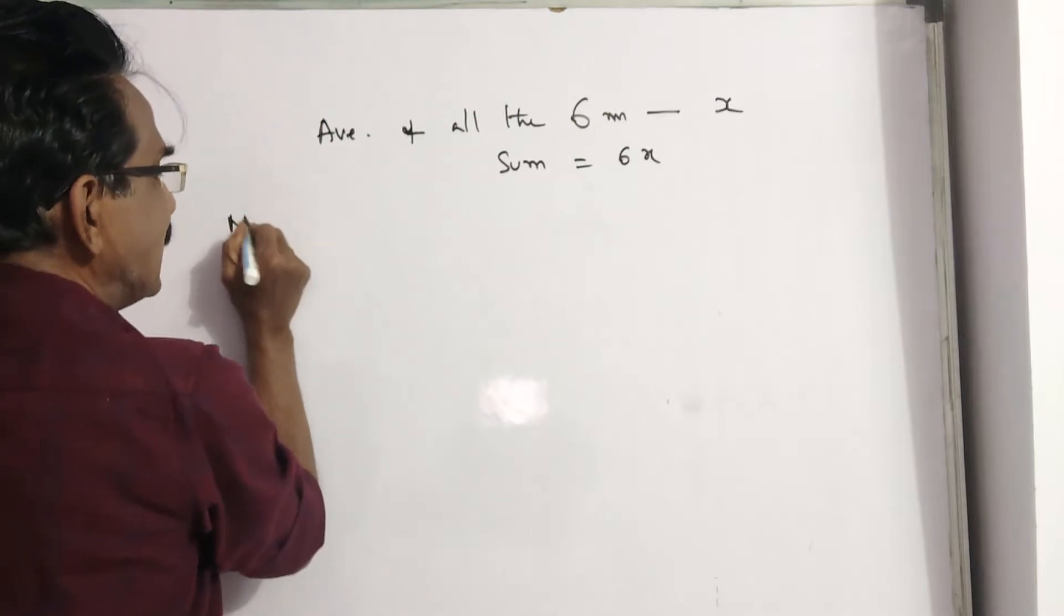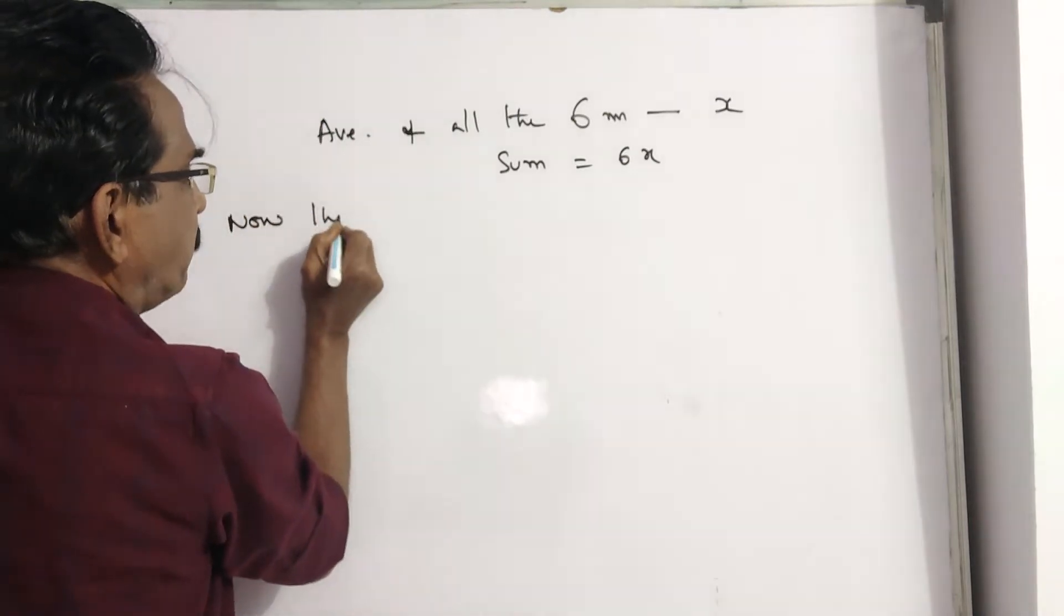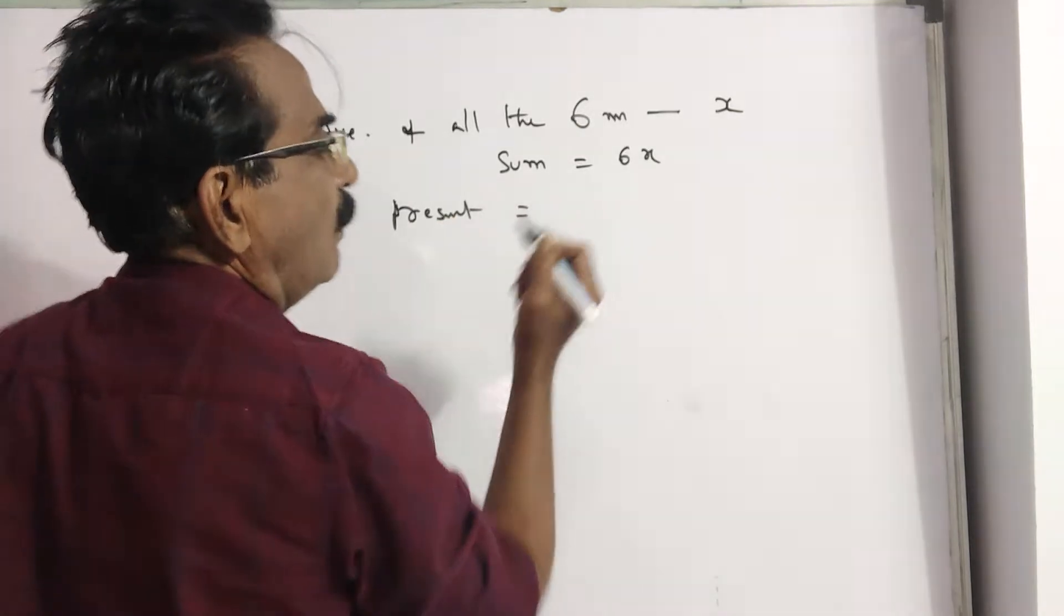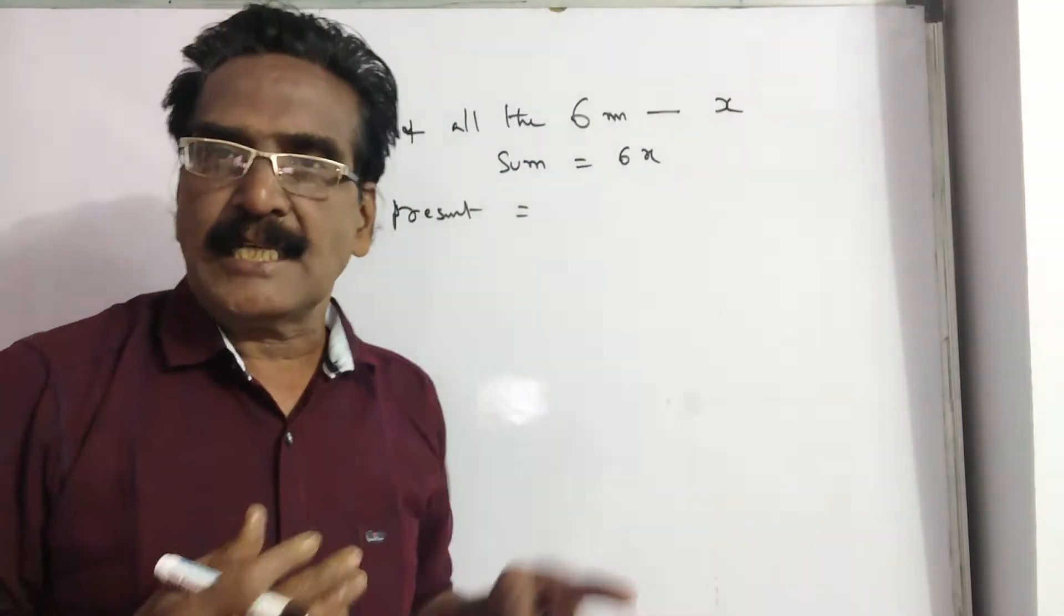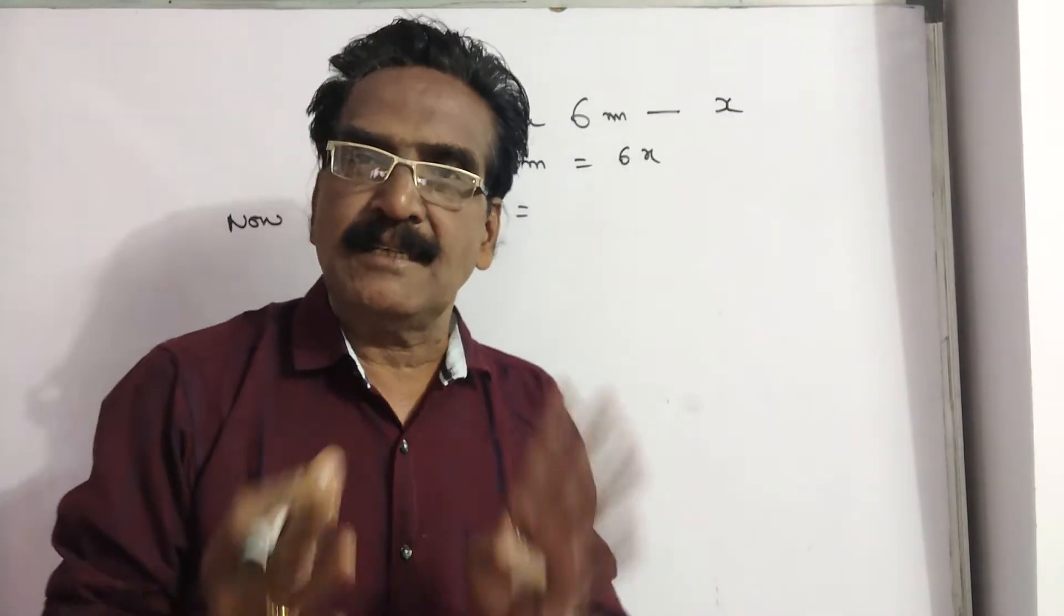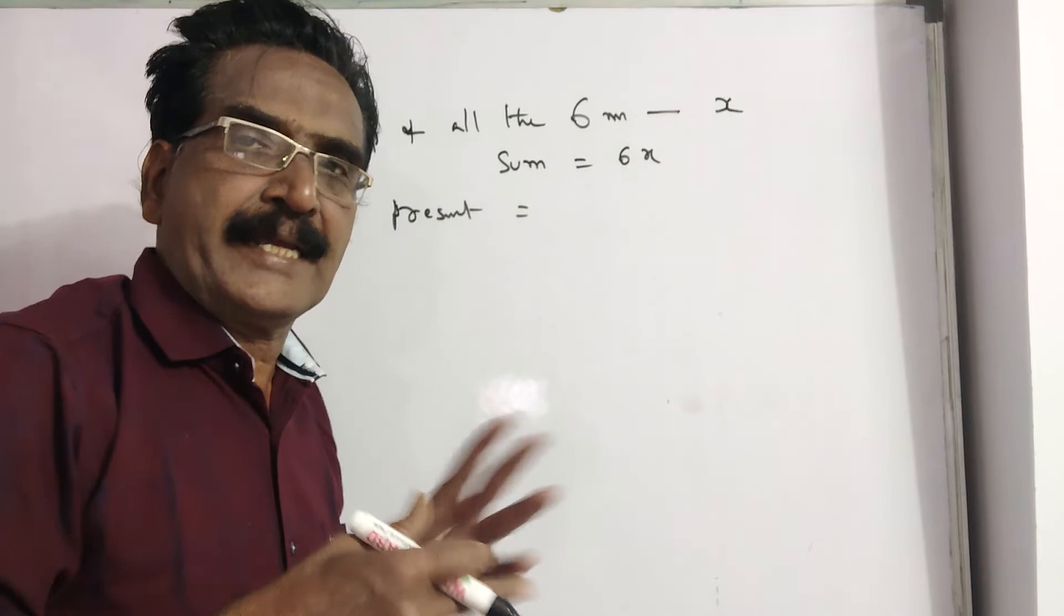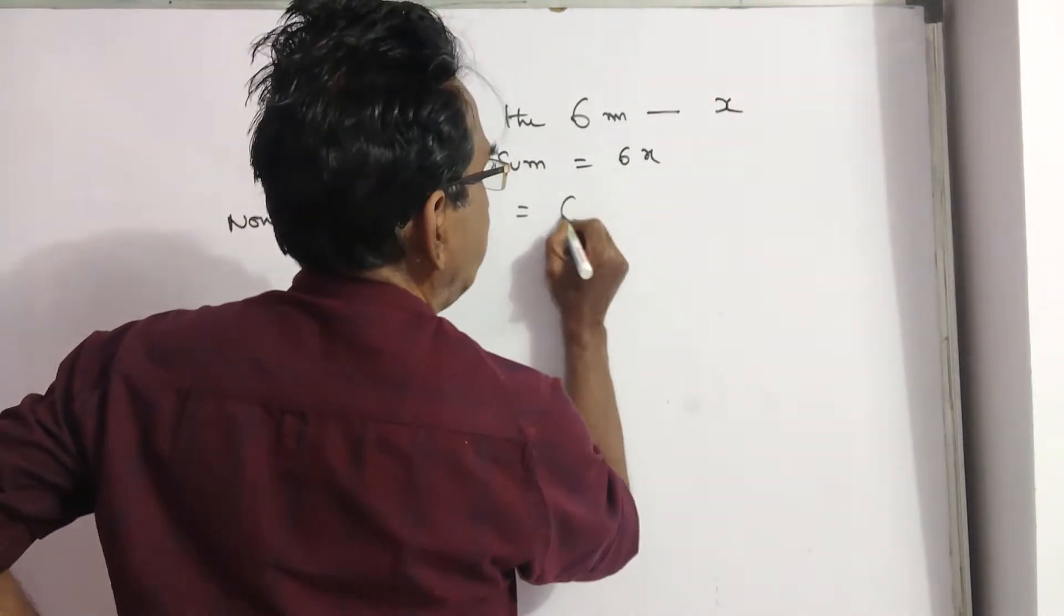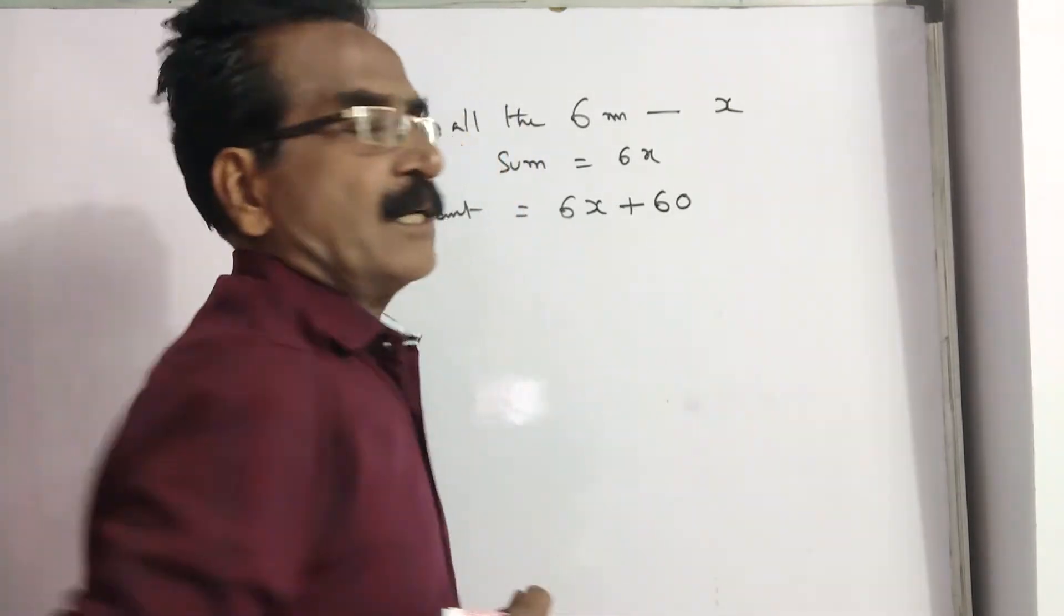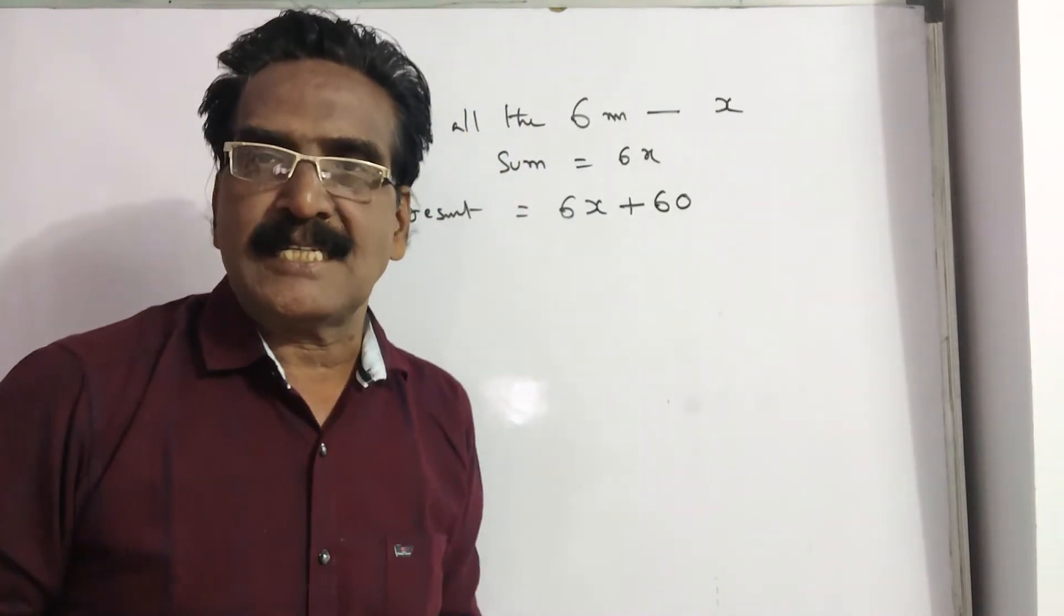Now the present sum of all the 6 members - see, 6 members, each member grows by 10 years. So, 6 into 10, 60 years sum will be increased by 60. So, now the present sum is 6X plus 60.